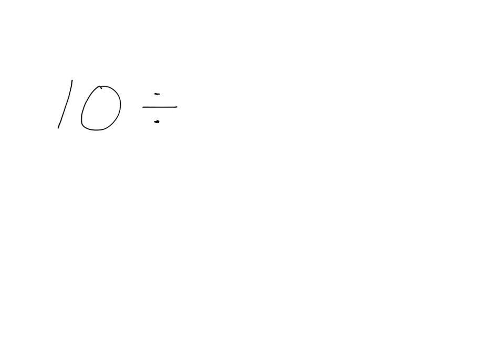For example, if we look at something like 10 divided by 2, what we can see this as meaning is we can see this as asking us how many 2s are there in 10. So how many 2s will we find in 10? And the answer to that is 5.